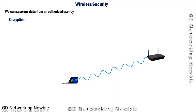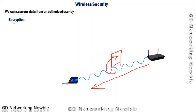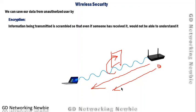We can also save our data from unauthorized users. If data is intended only for us but someone captures that frame, they can receive our message. To prevent this, we can encrypt our message. Whatever is being sent is scrambled so that even if someone receives it, the information cannot be understood by the outsider. Even if an outsider receives some packets, if the information is encrypted they will not be able to understand it.